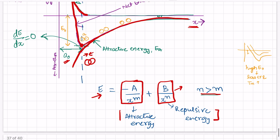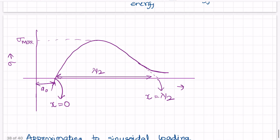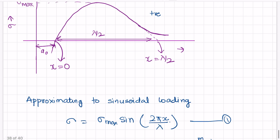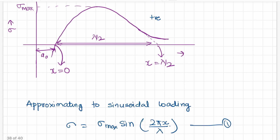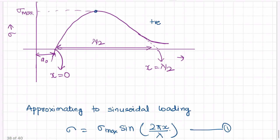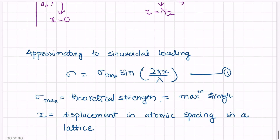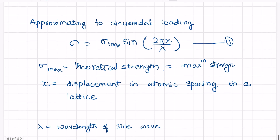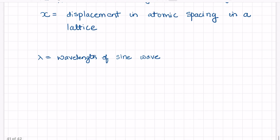If we look at the force versus displacement curve or stress versus displacement curve, this curve resembles a sinusoidal curve. We plot only the positive part because we are concerned about tensile loading. We can write the general equation: sigma equals sigma-max times sin(2πx / λ), where sigma-max is the theoretical fracture strength, x is the displacement in atomic spacing, and λ is the wavelength of the sine wave.